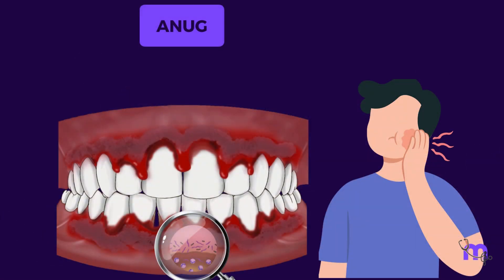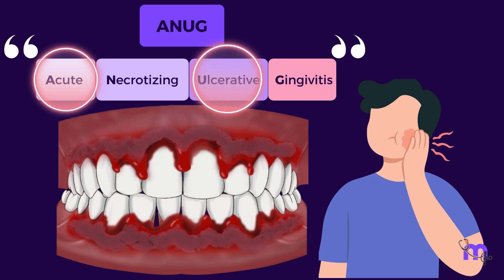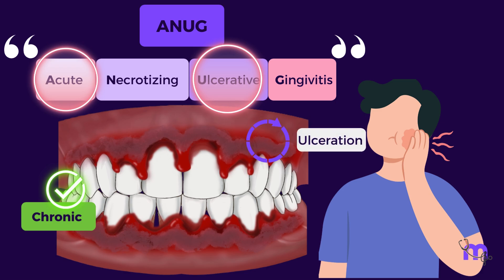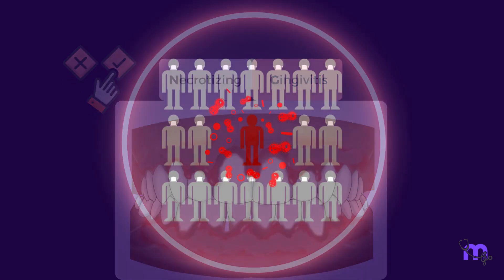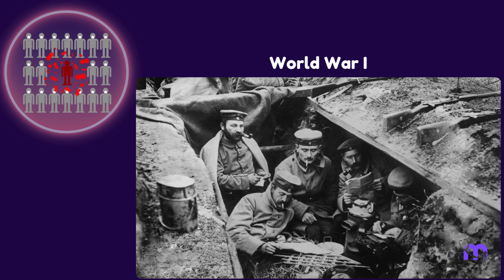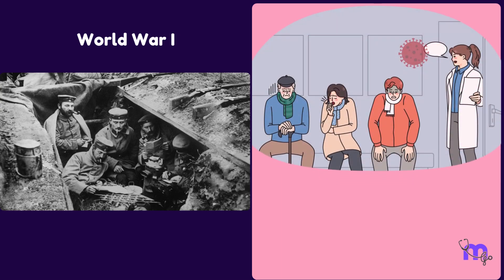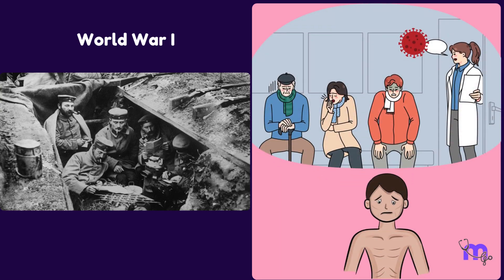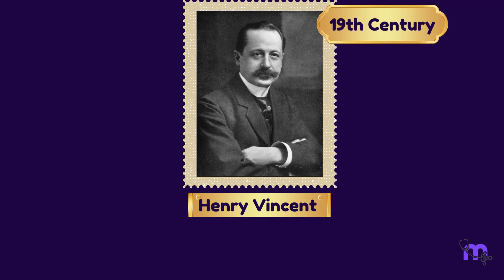ANUG, aka acute necrotizing ulcerative gingivitis, is a microbial disease of the gingiva in an impaired host. The terms acute and ulcerative are considered less precise, as chronic cases are also noted and ulceration is an indefinite sequence of the necrosis. The term NG, or necrotizing gingivitis, would be more appropriate. This condition was classically noted as an epidemic in the military population in the trenches during World War I, therefore calling it trench mouth. French physician Henri Vincent described this condition in the 19th century, giving it another name: Vincent's infection.